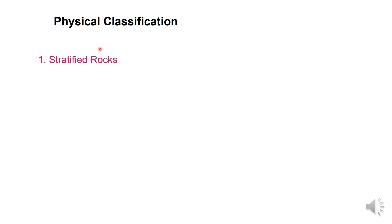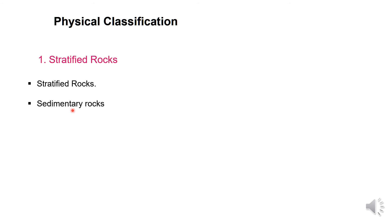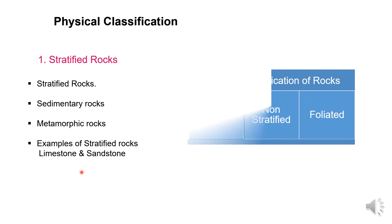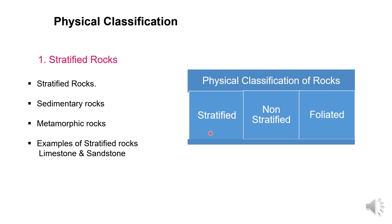In the classification of rocks, the physical classification includes stratified rocks, non-stratified rocks, and foliated rocks. Stratified rocks are formed by layers, which are also similar to sedimentary rocks. They split easily into thin slabs or layers, and hence are called stratified rocks. All sedimentary rocks are essentially of the stratified type. Metamorphic rocks may be either stratified or unstratified depending upon the parent rock. Examples of stratified rocks are limestone and sandstone.